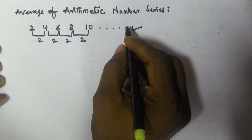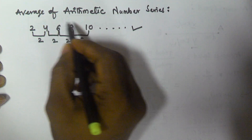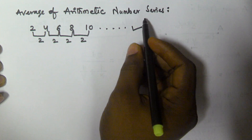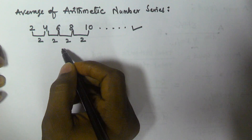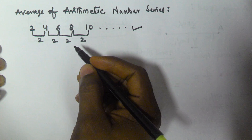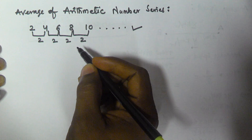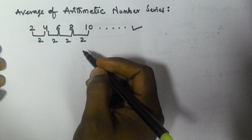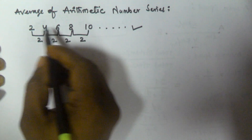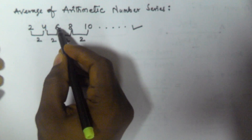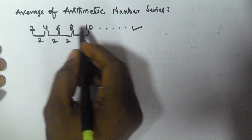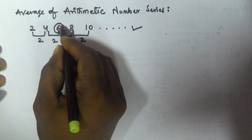In this video, I will explain the average of an arithmetic number series. For a given arithmetic series, the average of that series is going to be always the middle number. For example, we have these 5 numbers: 2, 4, 6, 8, 10. The average of these numbers is going to be the middle number, that is 6.